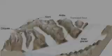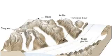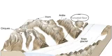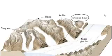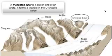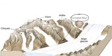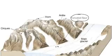Next we have truncated spurs. You can see these triangular formations here. The word truncate means to cut off, and a spur is something that sticks out. A truncated spur is the cut-off end of an arête — it's different from a horn. The main glacier came by, bulldozed its way down, and smacked off part of the ridge, creating these triangular truncated spurs.